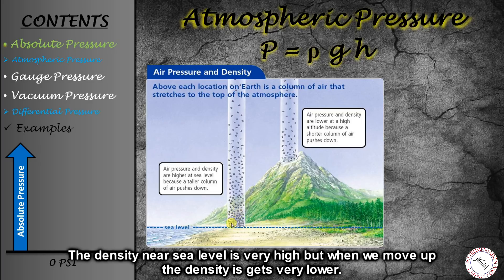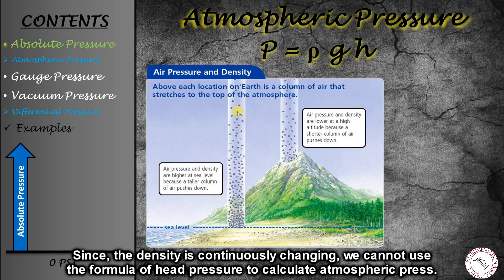Near sea level, the density of atmospheric gases is very large, and as we go higher, the density decreases. For atmospheric pressure, the head pressure formula — density times gravity times height — cannot be used directly because the density of gases is continuously changing with respect to height.